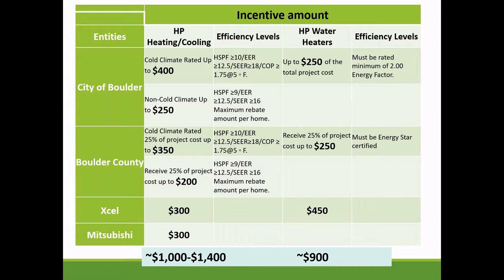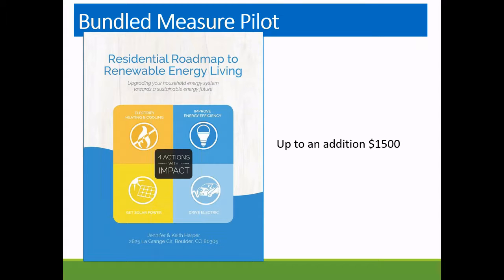With all the incentives, a resident seeking to add a heat pump to their home could get somewhere between $1,000 and $1,400 toward the cost. For a water heater, that was $900. This includes incentives from the city, the county, our utility Xcel, plus a $300 incentive that Mitsubishi put into our market. We also ran a concurrent pilot called the Residential Roadmap to Renewable Energy Living, where we prepared energy models of all homes in the city based on permit data and targeted candidates for solar, heat pumps, and efficiency with an additional $1,500 incentive.